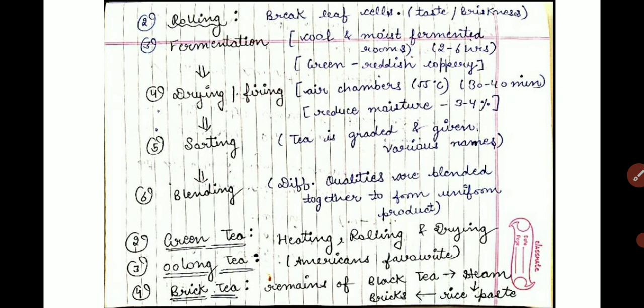So this was the processing of black tea. For green tea, oolong tea, and brick tea, the procedures are similar but with differences. For green tea, there are 3 processes: heating, rolling, and drying. After heating for a few minutes, the leaves are passed through a rolling machine and then dried.